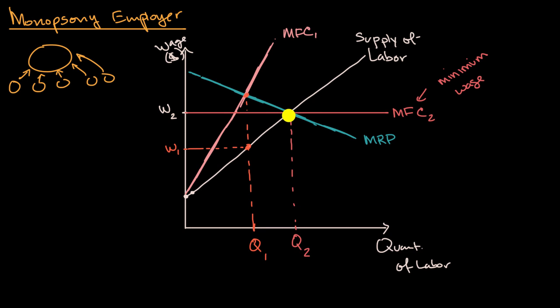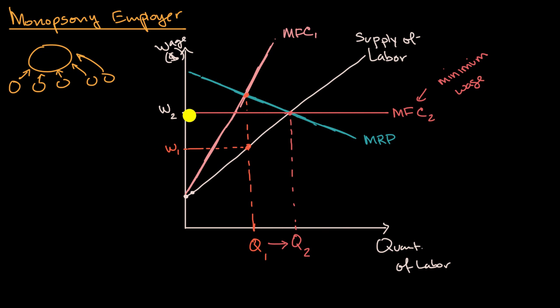Something very counterintuitive has happened. Now it's rational for the firm to hire more people. The reason it's counterintuitive is: if you're running a business and suddenly have to pay higher wages, you might say you can't afford as many people, so you'd reduce employment. That might be the case in other types of labor markets, but for a monopsony employer, this actually caused the employer to hire more. Now the employer pays the same wage regardless of how many people they hire. Before, every incremental unit of labor raised the wage for everyone — so in a very real way, this made it rational for the firm to hire more.